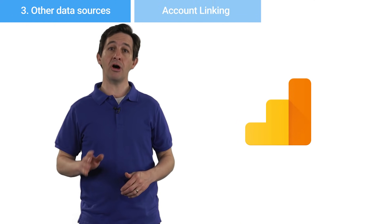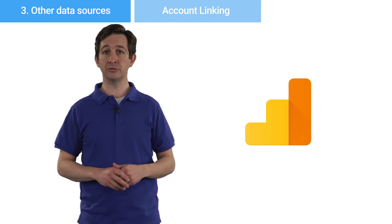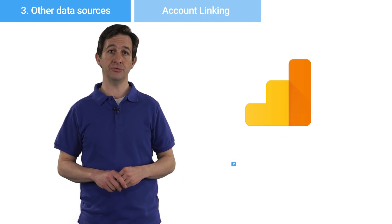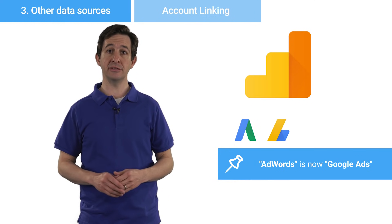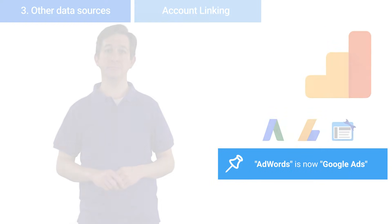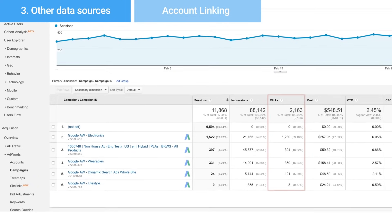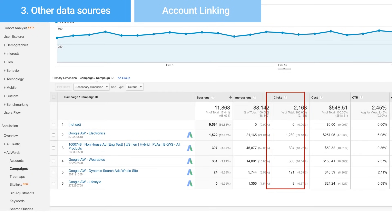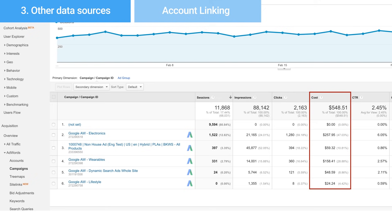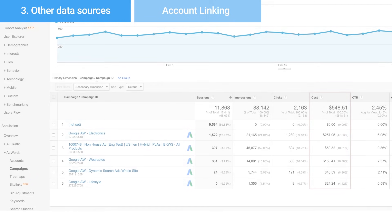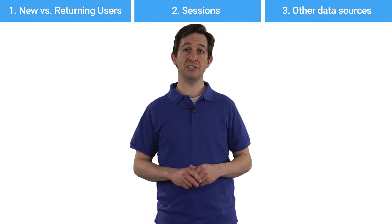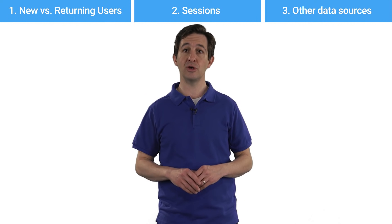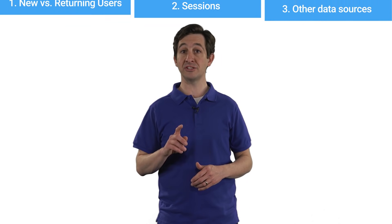Google Analytics can also link data from other Google marketing tools like AdWords, AdSense, or the Google Search Console. This allows information like AdWords clicks, impressions, and cost data to be viewed in your Analytics account. These are the first three steps Google Analytics takes when processing data. Watch the next video to see how Analytics finishes processing data.